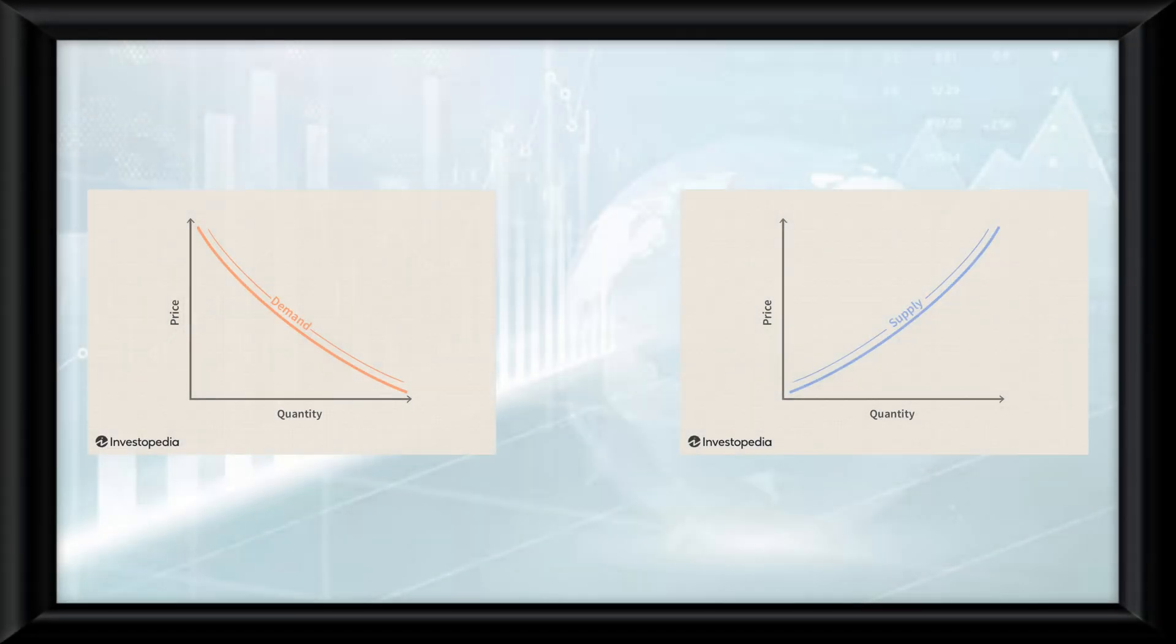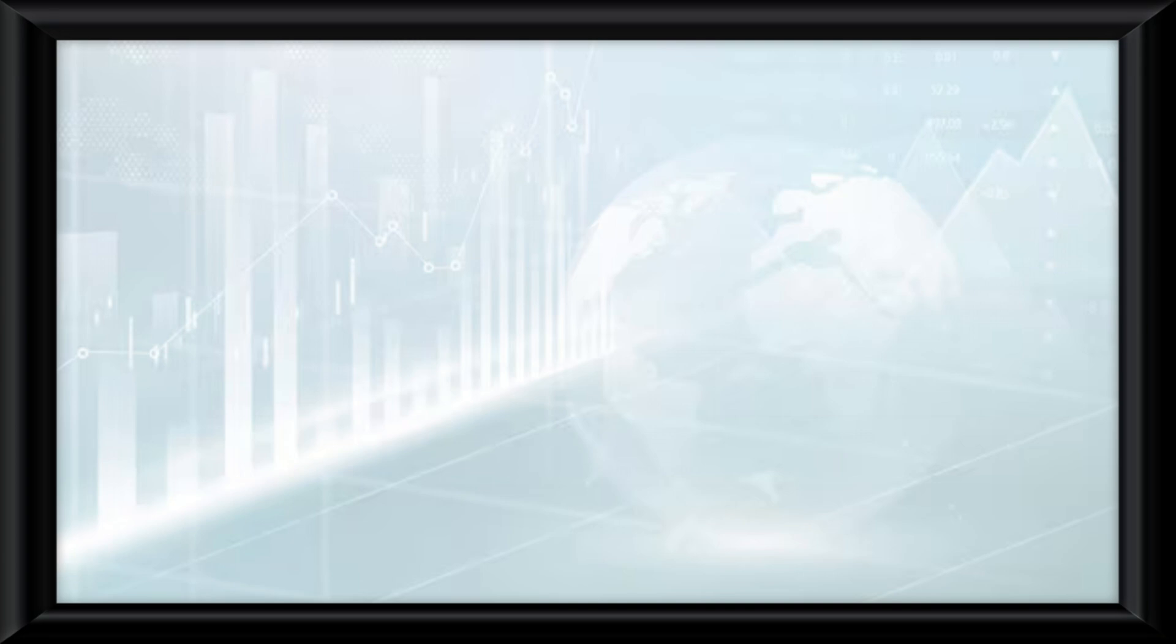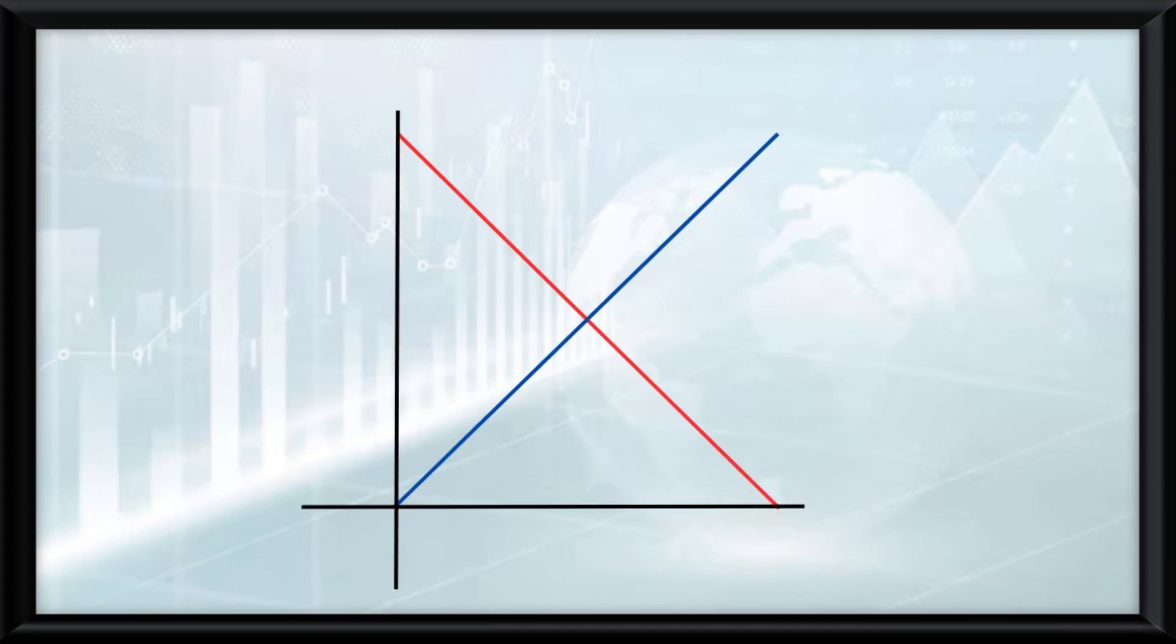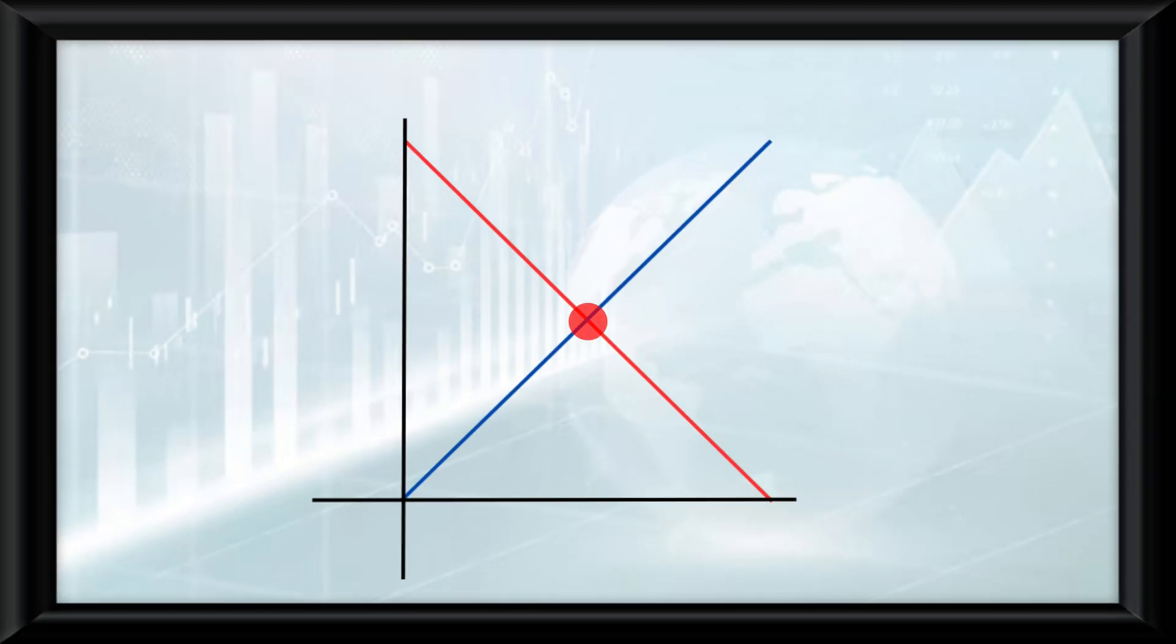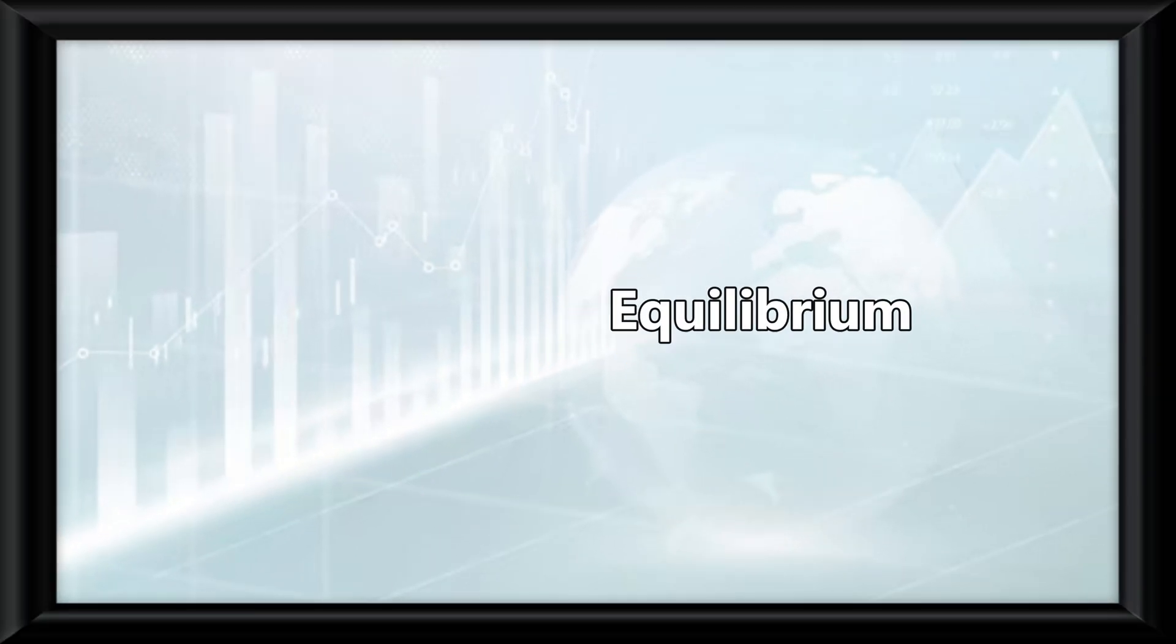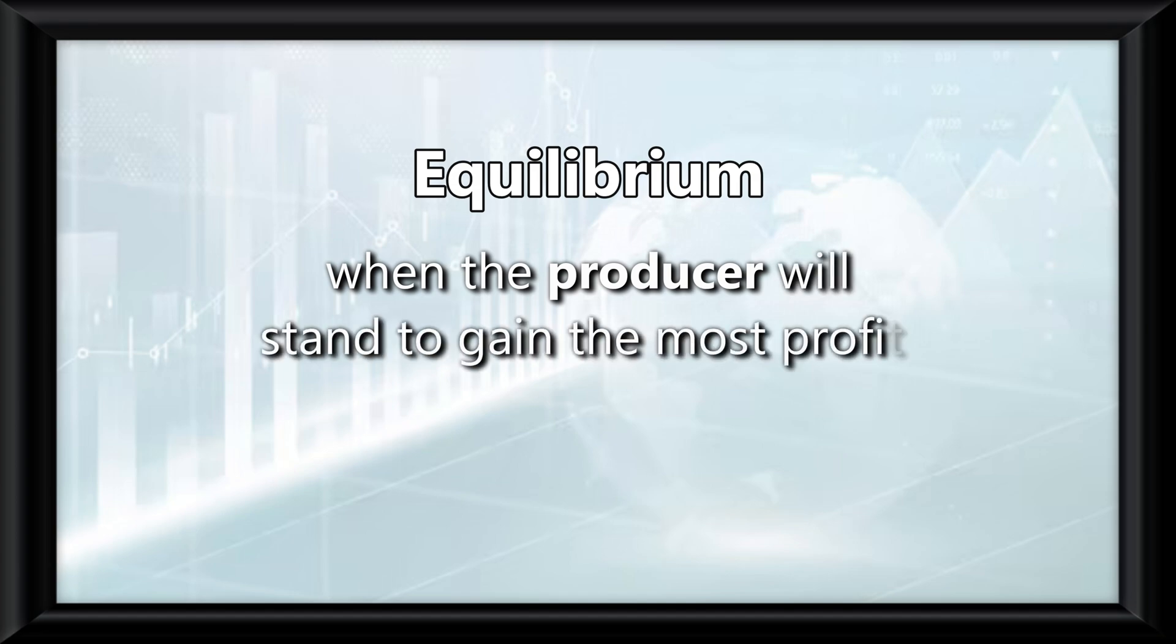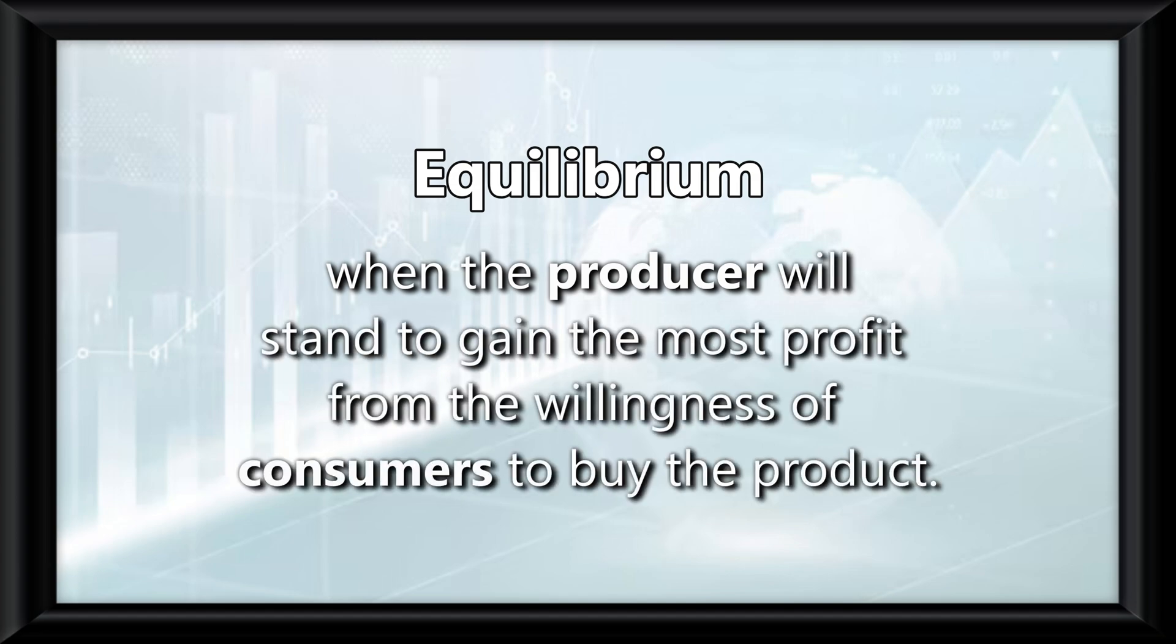So we have two curves, a downward sloping demand curve and an upward sloping supply curve. If we were to put them onto one graph, we get what is known as the supply-demand model. This graph shows many concepts we'll go over in this video. The intersection points of these lines shows when the model is in equilibrium. This means when the producer will stand to gain the most profit from the willingness of consumers to buy the product.